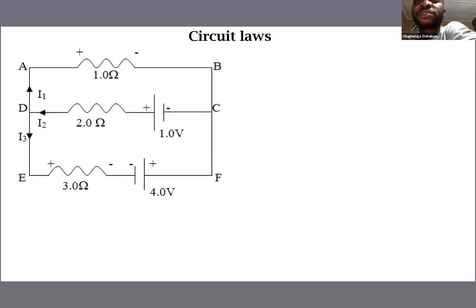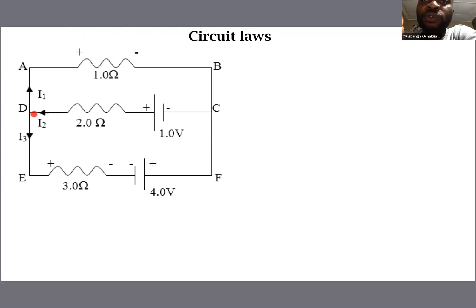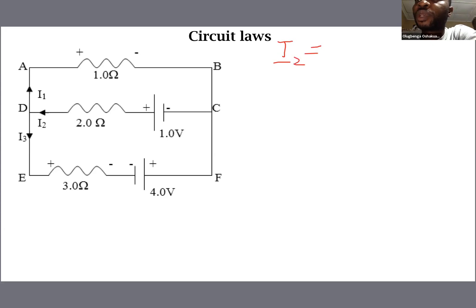This is another example on circuit loss. Looking at the diagram, I2 flows to junction D and splits into I1 and I3. From Kirchhoff's current law, we can say I2 is equal to I1 plus I3.